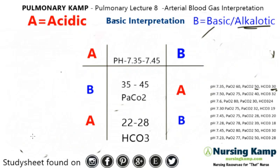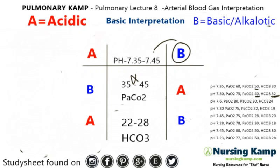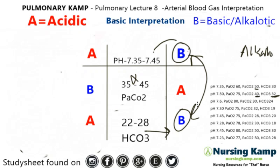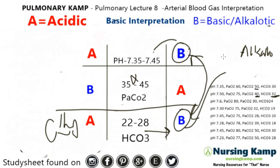Next one — the pH is 7.50. That's greater than 7.45, so it's over on the basic side. The PACO2 is 40, sitting in the normal range. The HCO3 is 32, which is greater than normal. We connect the two that are alike — we have alkalosis, and this is the metabolic column because we said that's the kidneys. So it's metabolic alkalosis.